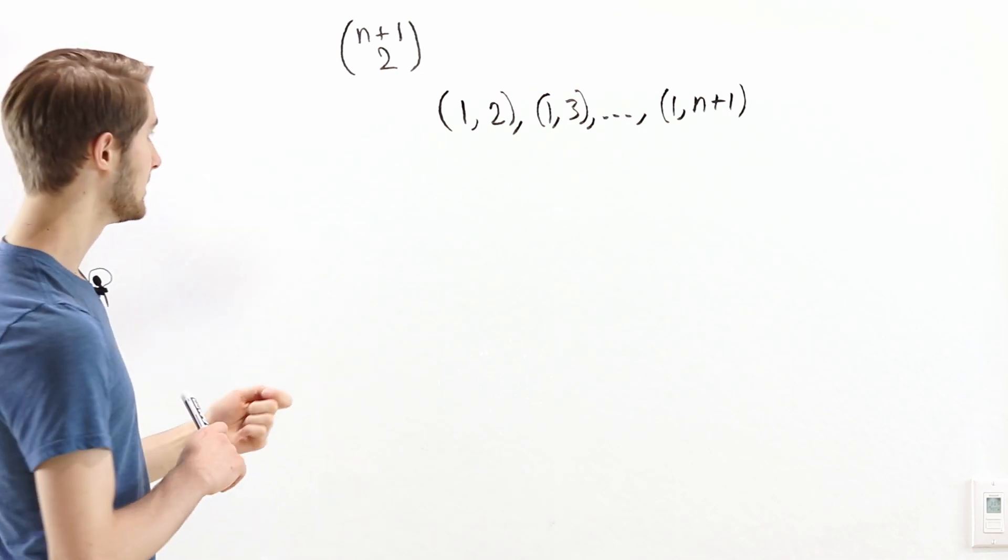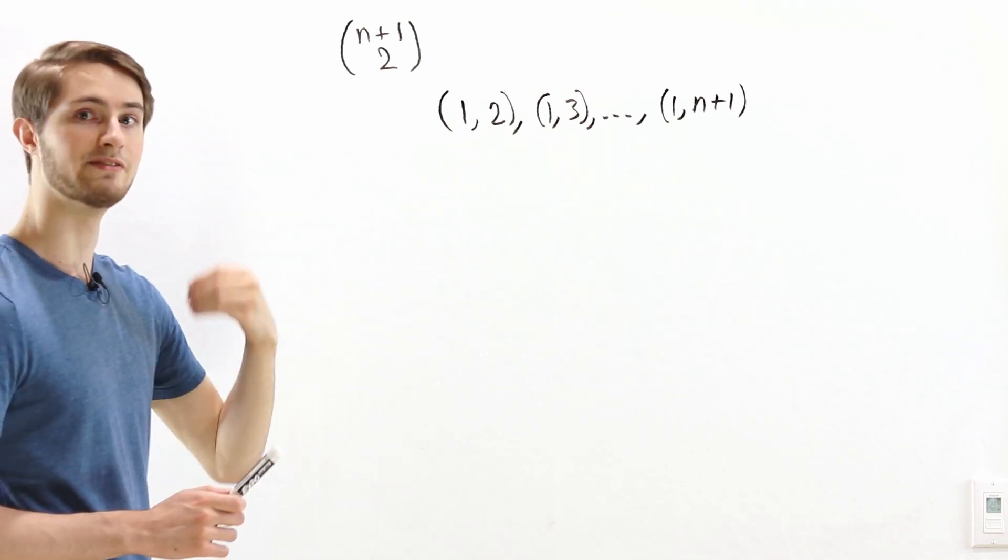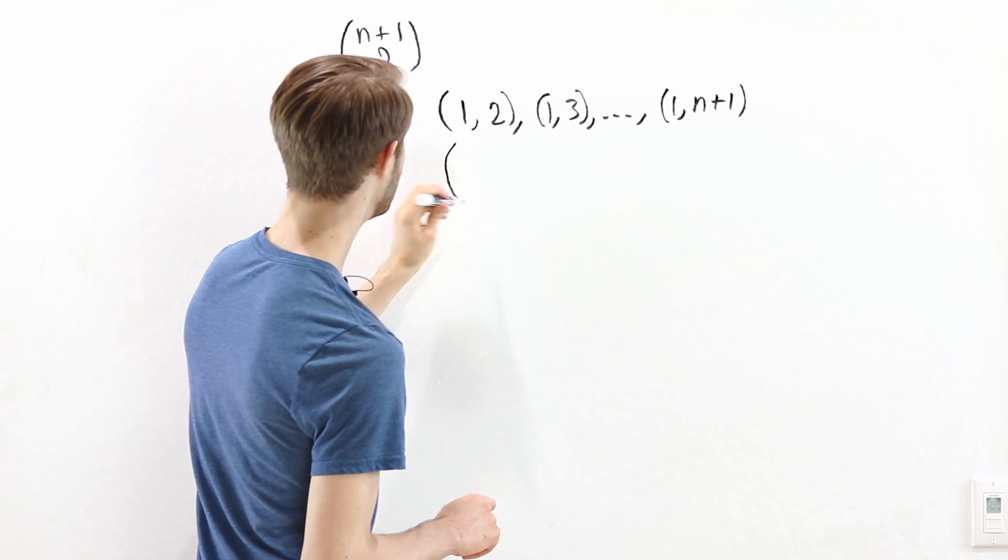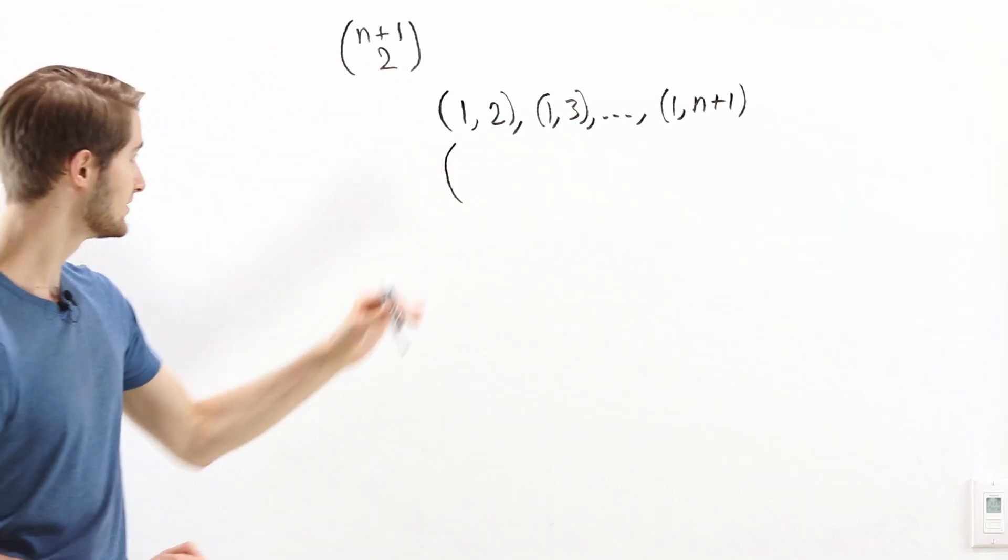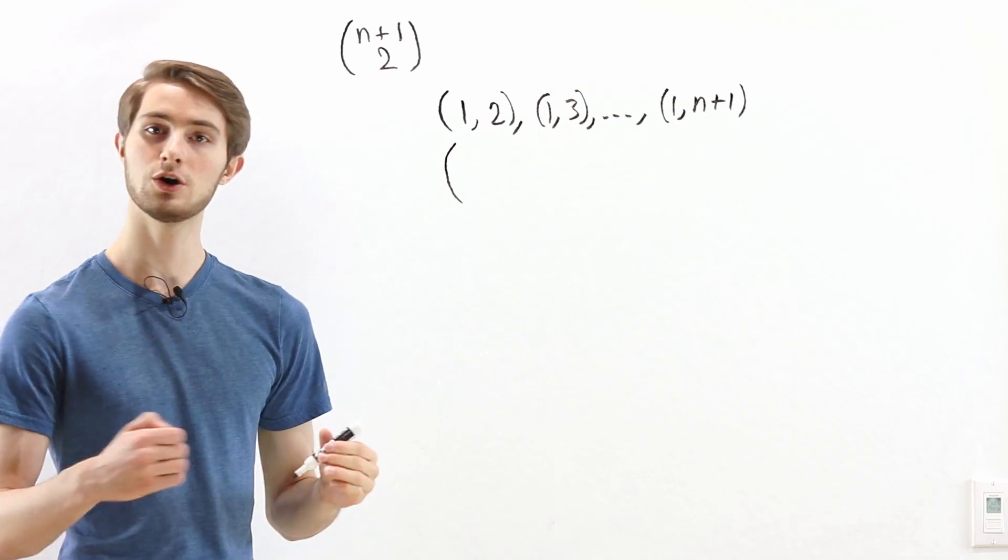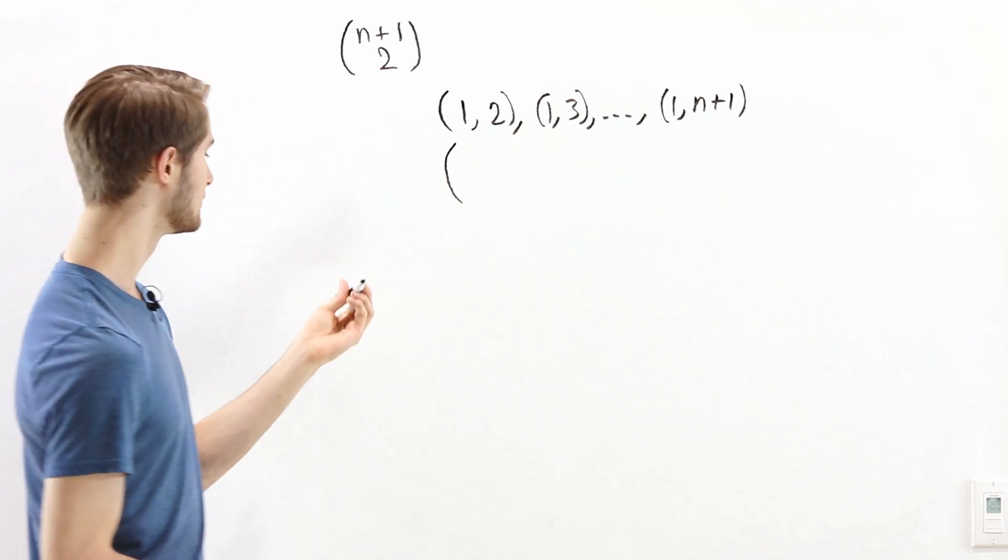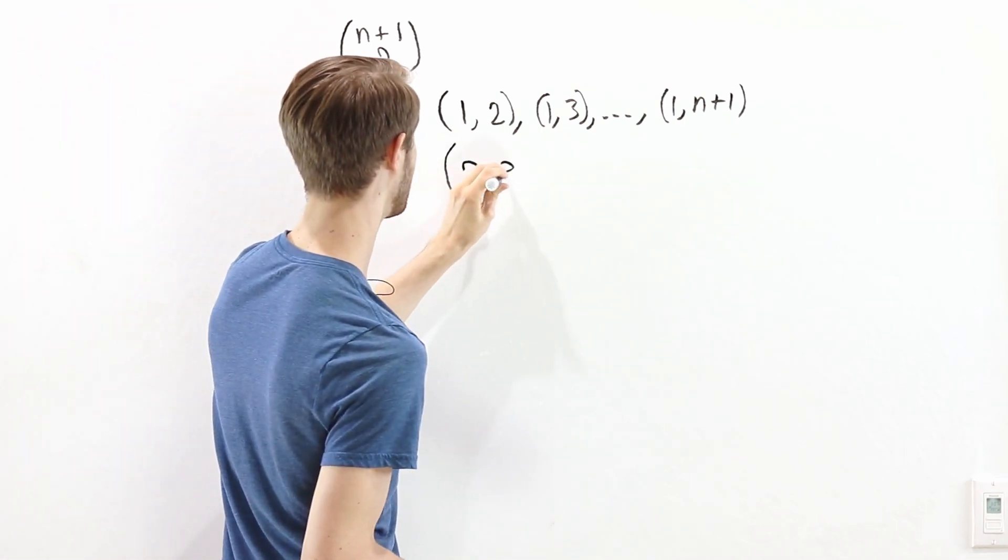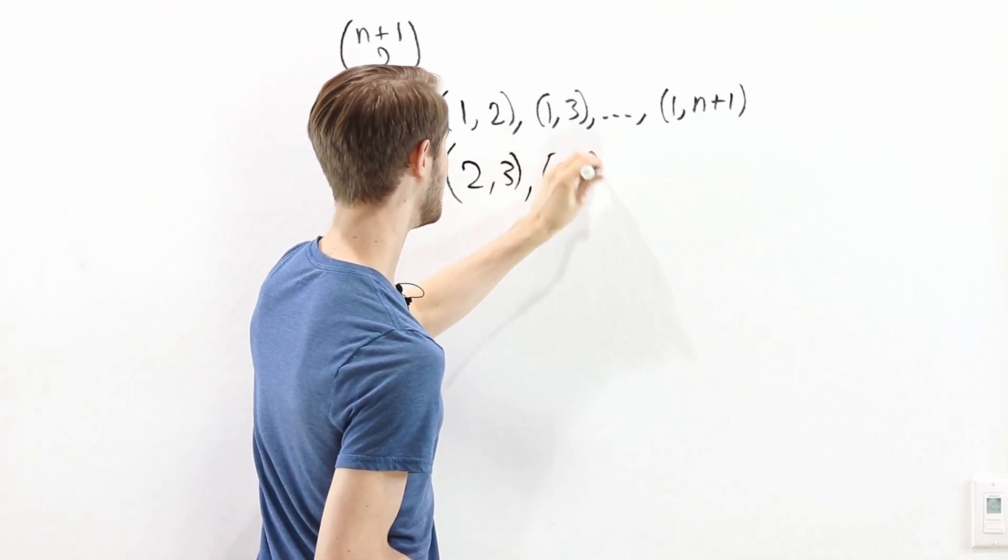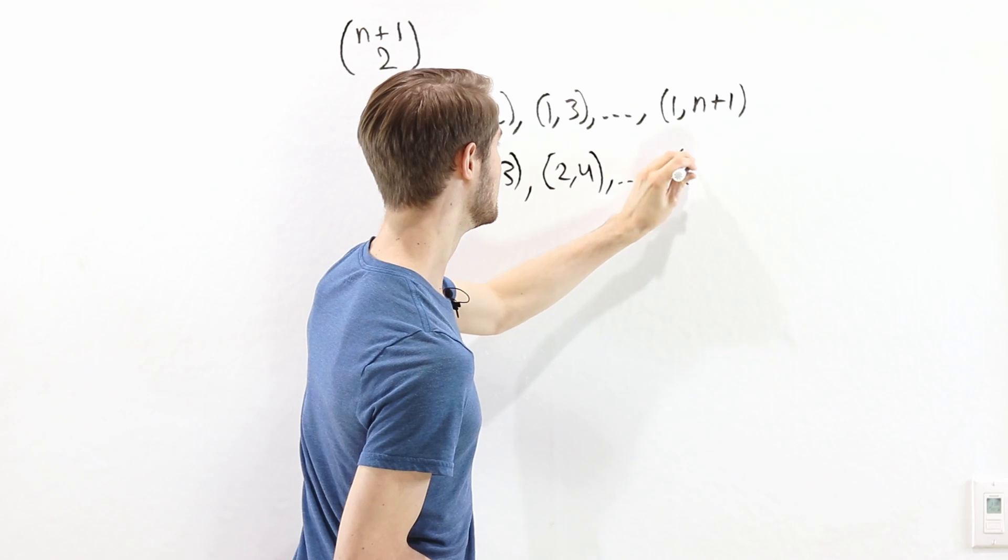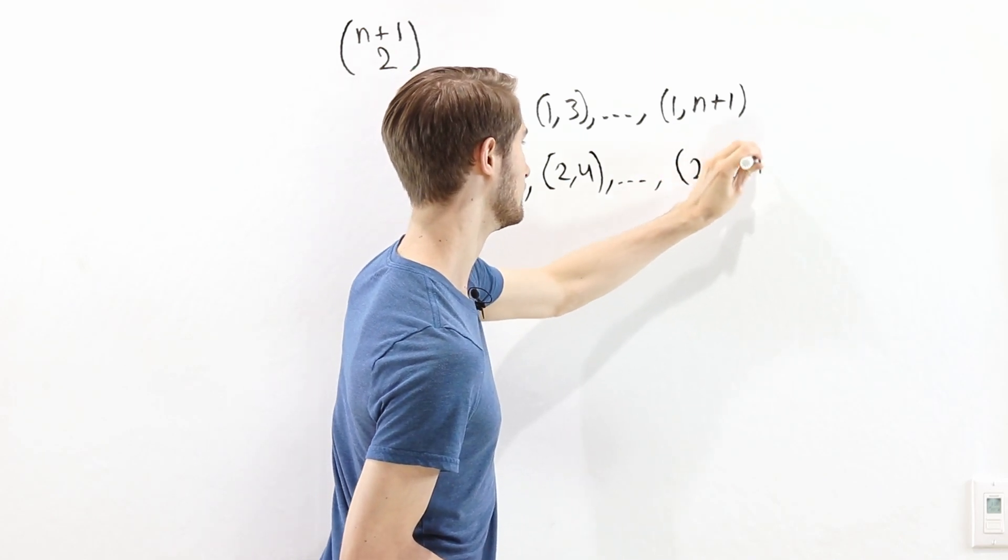After that, we want to think about all of the choices that have a 2 in them. Now we're not going to start with 2,1 because order doesn't matter, so that's the same thing as 1,2. We already counted that one. So we're going to start with 2,3. And after that, we have 2,4, 2,5 all the way up to 2, n plus 1.